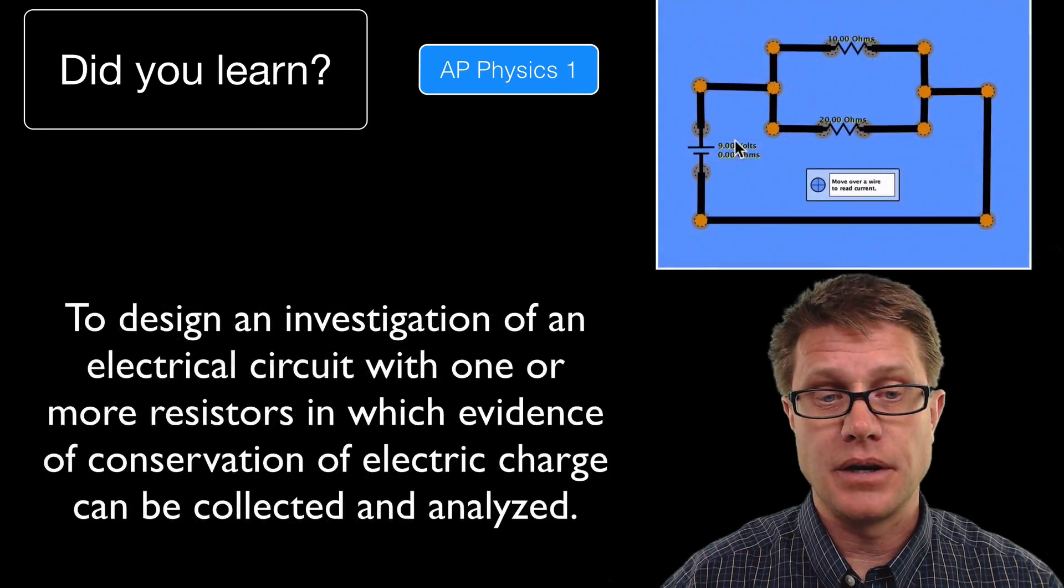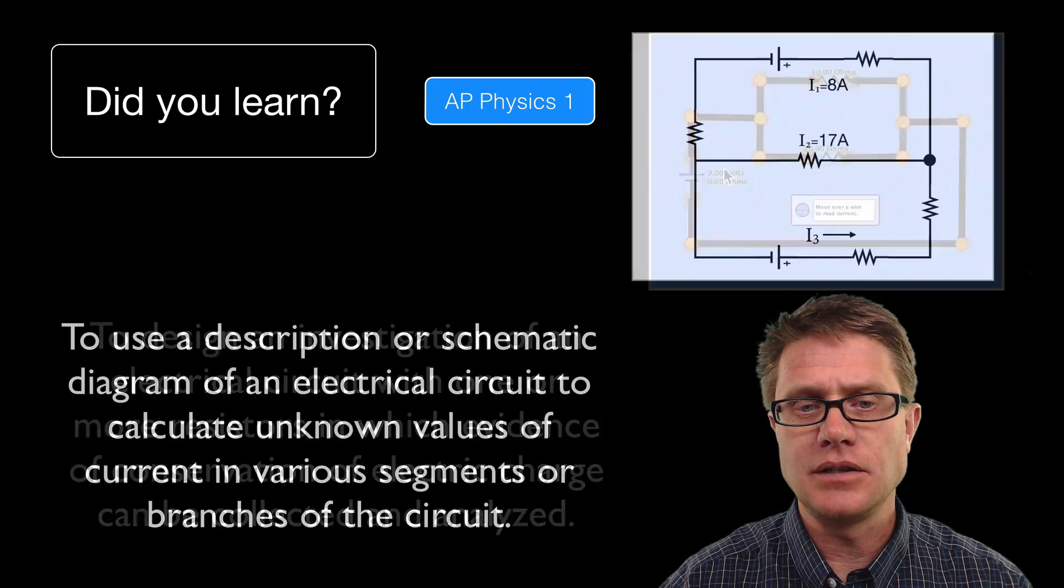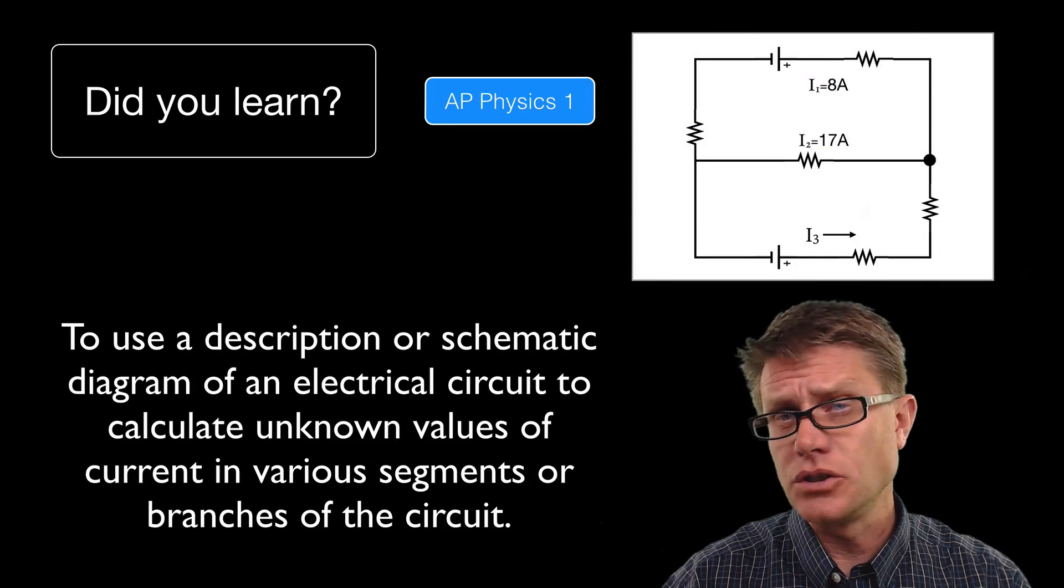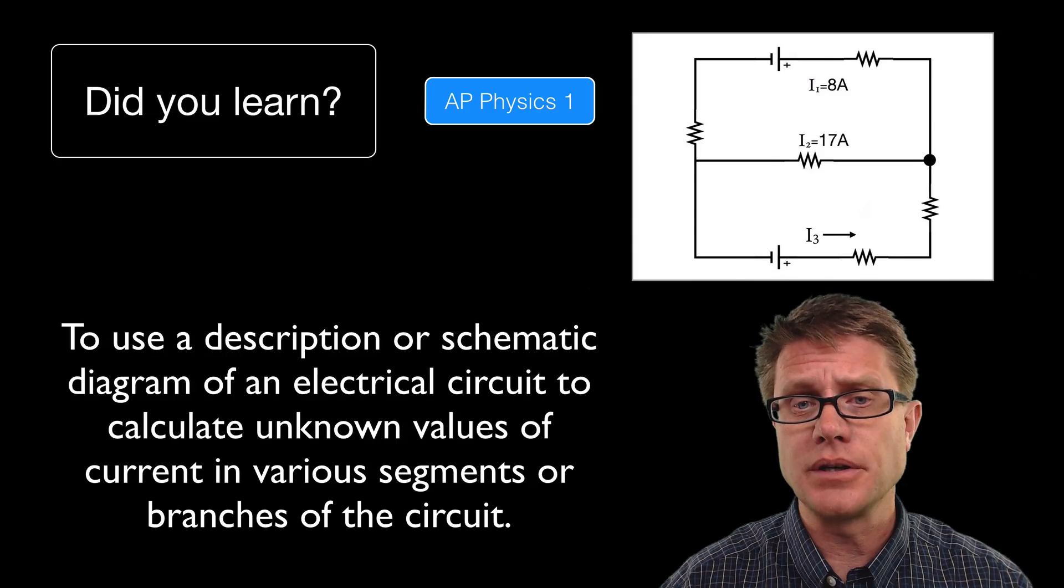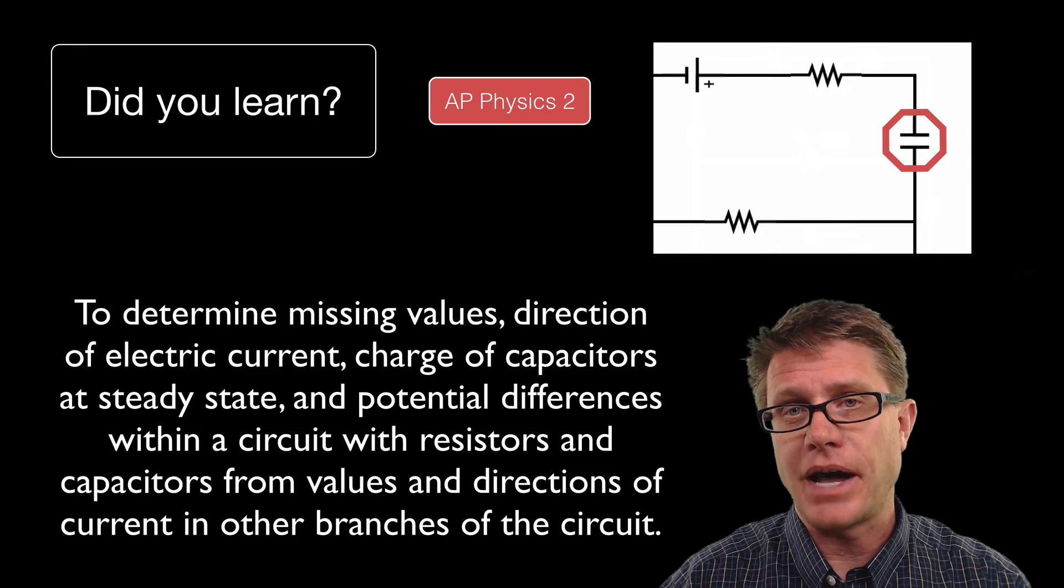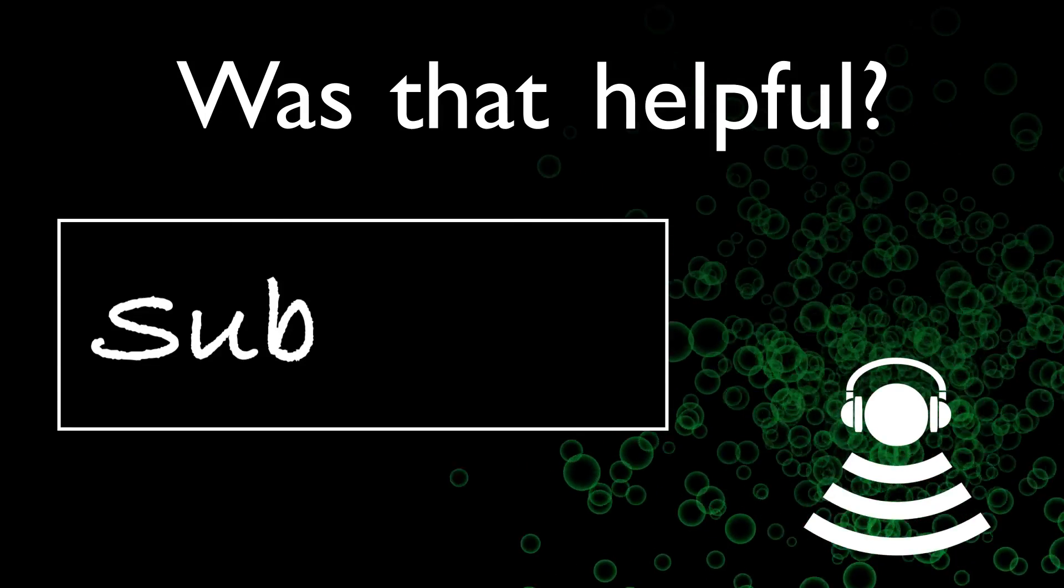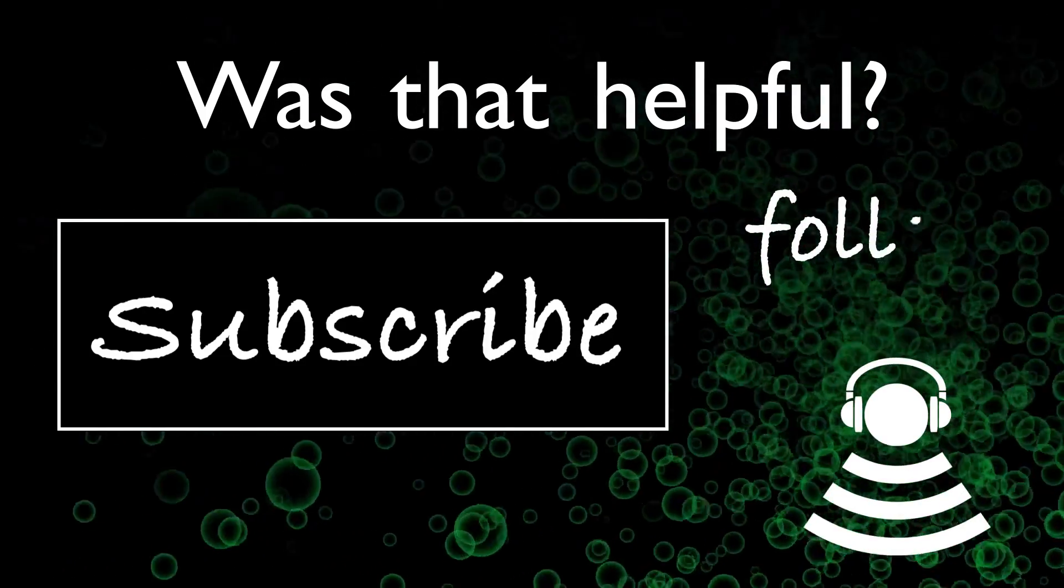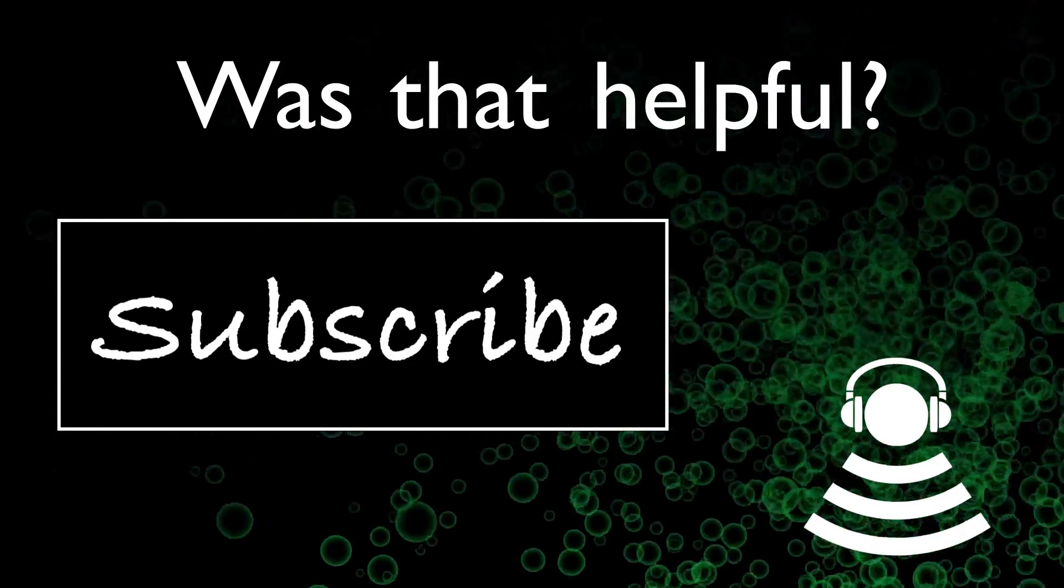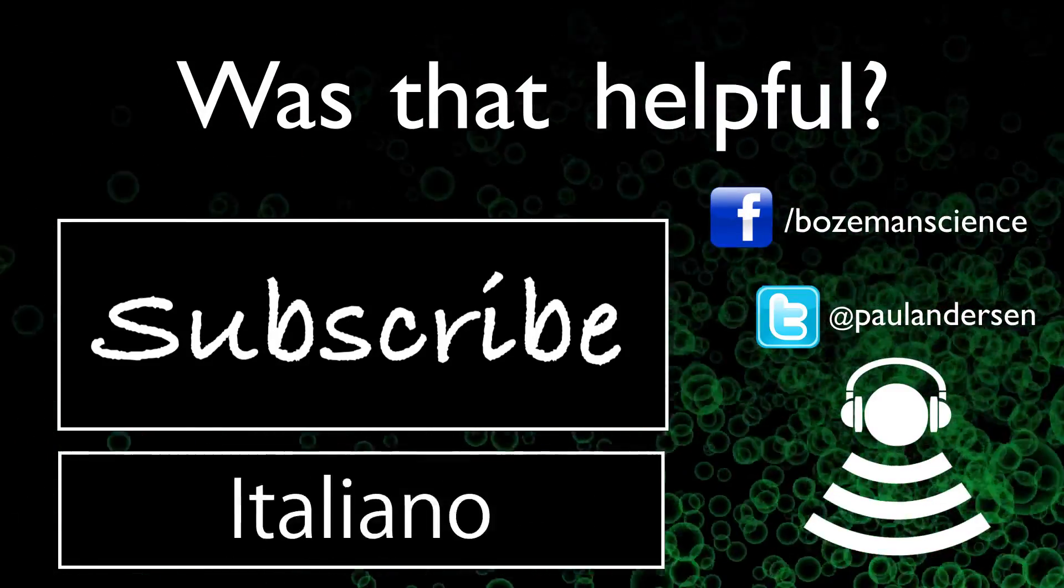And so did you learn to apply Kirchhoff's law. Again, current in is equal to current out. Could you design an investigation? Again I used a PHET simulation to do that. Could you use schematics to figure out where the current is? And then finally as you move into physics 2, do you understand how capacitors can act as a break in a circuit? I hope so. And I hope that was helpful. Thank you.